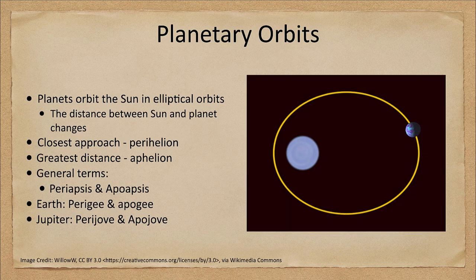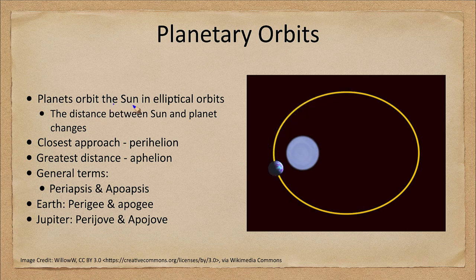What are aphelion and perihelion? First, let's talk about orbits. We know that planets orbit the sun in elliptical orbits, and that means the distance between the sun and planet changes.